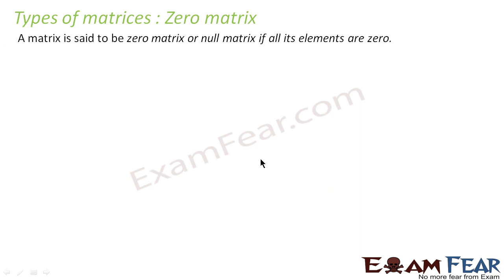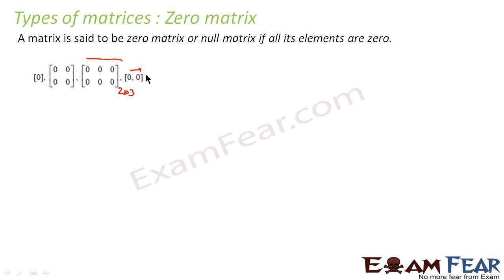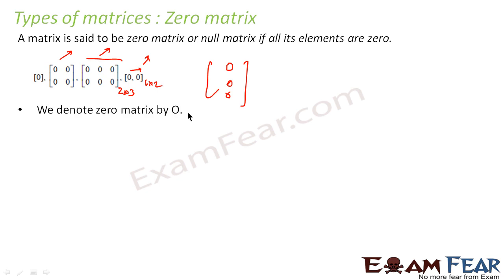Let us understand the zero matrix. A matrix is called a zero matrix if all its elements are zero. Note that it is not mandatory for a zero matrix to be a square matrix — any matrix type is fine. It can be a row matrix, column matrix, rectangular matrix, or square matrix. As long as all elements are zero, it is a zero matrix. We denote the zero matrix by O.